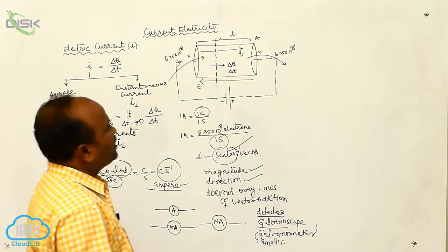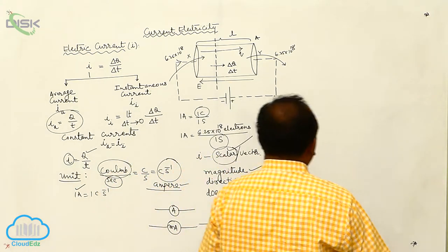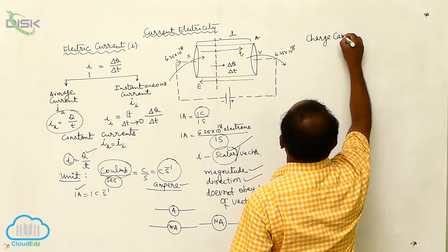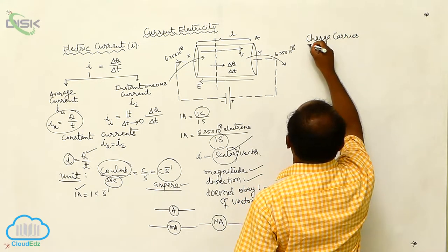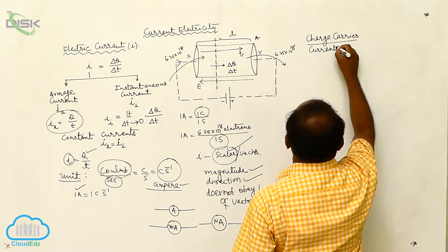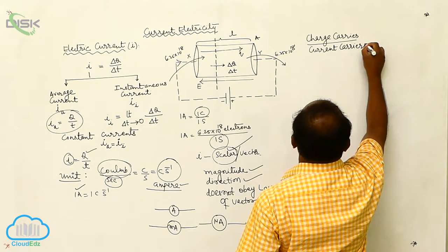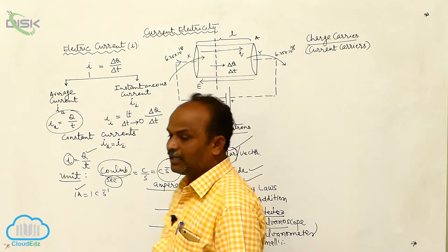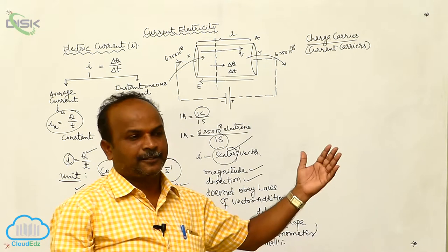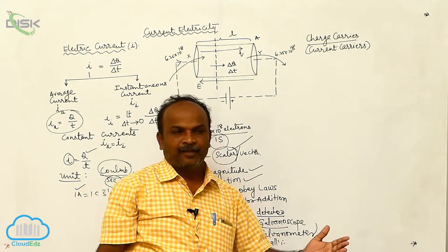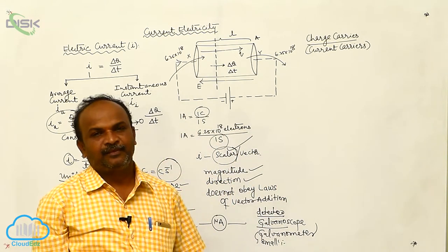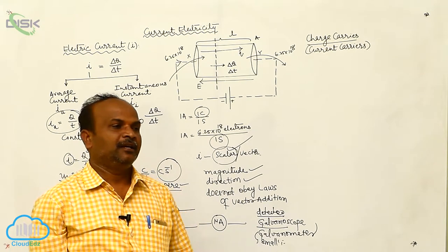Charge carriers, also called current carriers. What are the current carriers? Flow of charges perpendicular to the cross-sectional area in one second is called current.